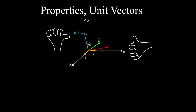We can observe some properties of the cross product. First, the cross product is not commutative: a cross b equals the negative of b cross a. Using the right-hand rule, curling your fingers from a to b has your thumb pointing in the positive z direction, whereas flipping your right hand and curling from b to a gives a vector pointing in the opposite direction but having the same magnitude.